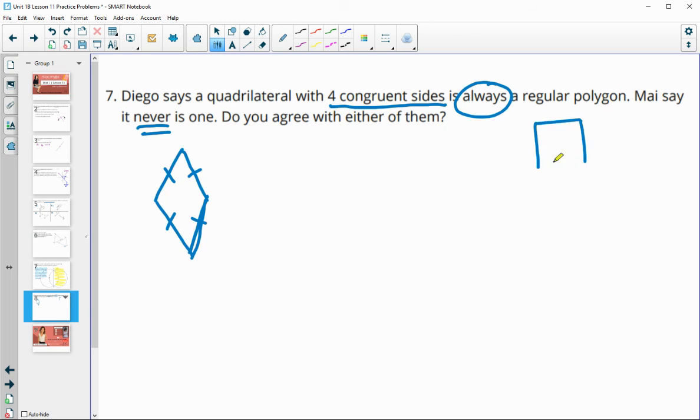A regular quadrilateral would be a square, all equal sides and all 90 degree angles. So a rhombus doesn't have to always be regular. And it also isn't never because we do have this one with all four equal sides. So it's sometimes. Sometimes a quadrilateral with four equal sides could be regular, provided that it also has the equal angles.